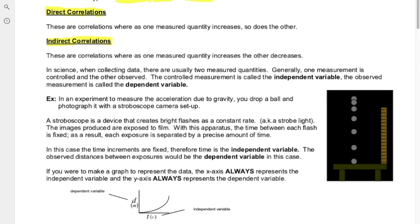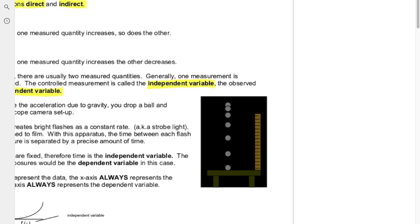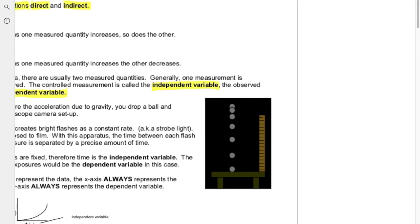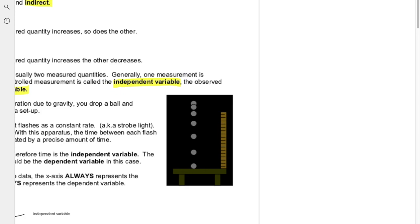Whenever you're doing an experiment, you're usually comparing one parameter to another parameter, and that's where we get the terms independent variable versus the dependent variable. Let's say you wanted to do an experiment where you are trying to figure out the speed of a car — observing how a car is moving as time goes on.